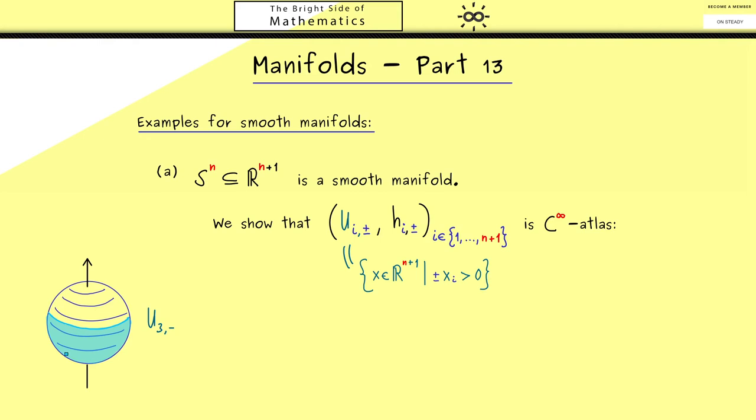In this sense it's best to visualize this with the two-dimensional sphere in R³. For example the southern hemisphere here is given by u_3^-. And then the corresponding map h will just get rid of the third coordinate here. Or more generally the map h_i^± will map a given vector with n+1 components to a vector with only n components. More precisely the trick is that we omit the ith component. This means that we go to x_(i-1) and then comes x_(i+1).